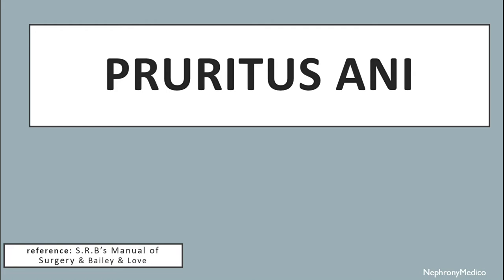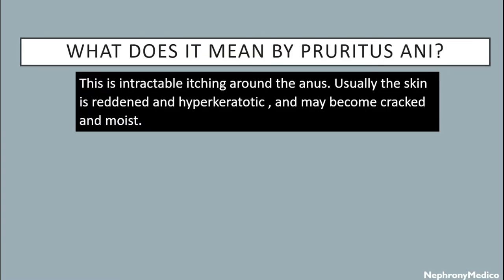Let's talk about pruritus ani. Pruritus ani refers to intractable itching around the anus, where the skin is usually reddened and hyperkeratotic, and may become cracked and moist.